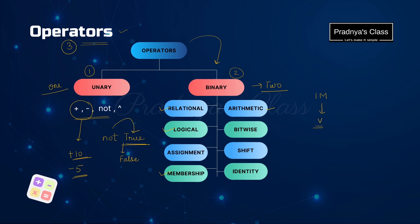To make sure you know them, here is the list of operators. Arithmetic operators are plus, minus, multiplication, division, modulus, and exponentiation. There is one more arithmetic operator — floor division.